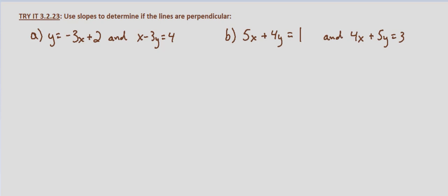The process begins with the same steps as when we were determining if lines were parallel. We need to put them in slope intercept form. The only difference is that we only need to look at their slopes.